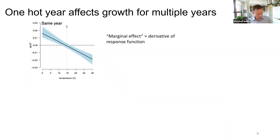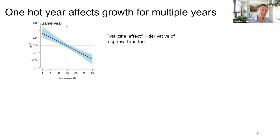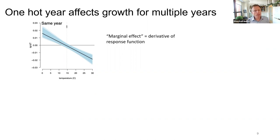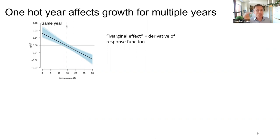We also want to understand whether a hot year affects output this year but also in subsequent years. We run a lagged model where heat can affect output in this year and in subsequent years. I show these as marginal effects — the derivative of the hill-shaped function. If positive, countries benefit from warming; if negative, they're harmed. The US population-weighted average temperature is about 14 degrees Celsius — very close to or just past the peak.